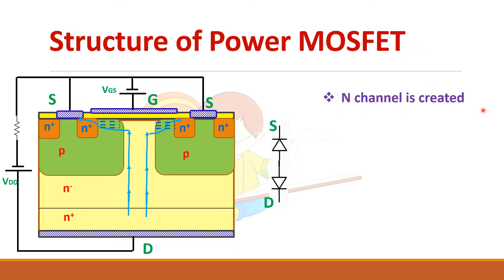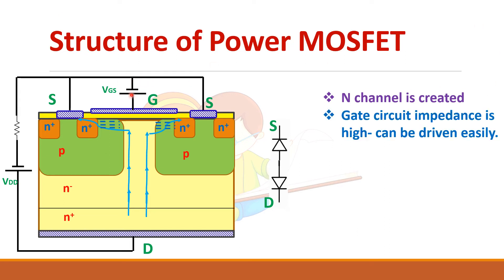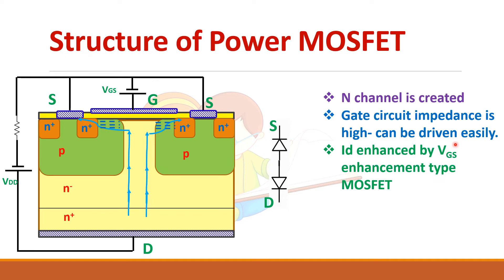An N channel is created with the help of this gate-source voltage, and the gate is insulated from the rest of the device, so it will not draw much current from the gate-source voltage. Therefore, a small microcontroller can easily drive the MOSFET. Driver circuit design is easy, and this is enhancement type MOSFET because as you increase the gate-source voltage the drain current increases.